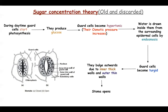Once the stomata are open, exchange of gases occurs through the stomata and photosynthesis can be carried out throughout the day. At night, there is no photosynthesis, so there is no production of glucose. The guard cells are no longer hypertonic. Water goes out by exosmosis, the guard cells become flaccid, and they close the stomatal opening. This is the sugar concentration theory — the old, now discarded theory.